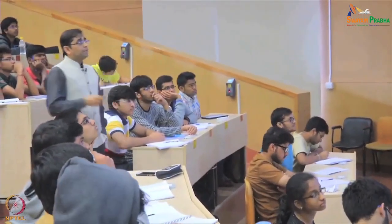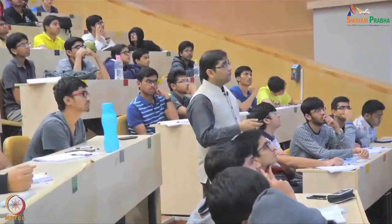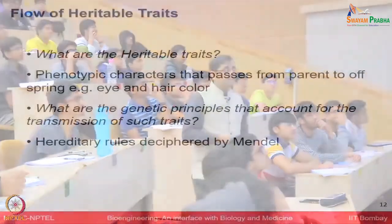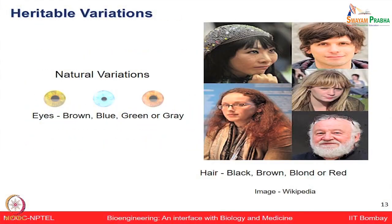What are the genetic principles that account for the transmission of these traits? Many of the rules deciphered by Mendel became the heritable trait rules. You can observe different patterns of hair and eye colors — these are natural variations that keep passing from one to the next generation, and we see that these are heritable characters, heritable variations.